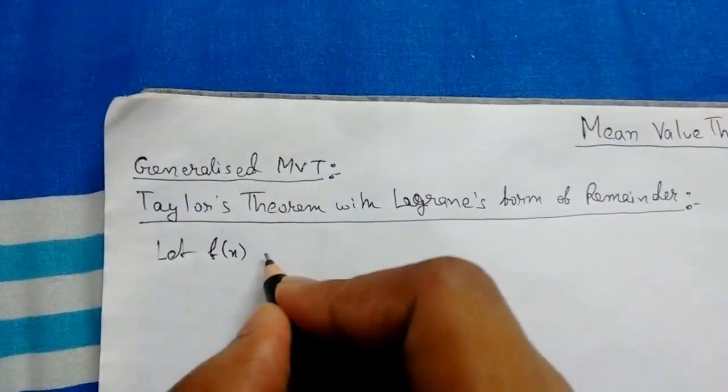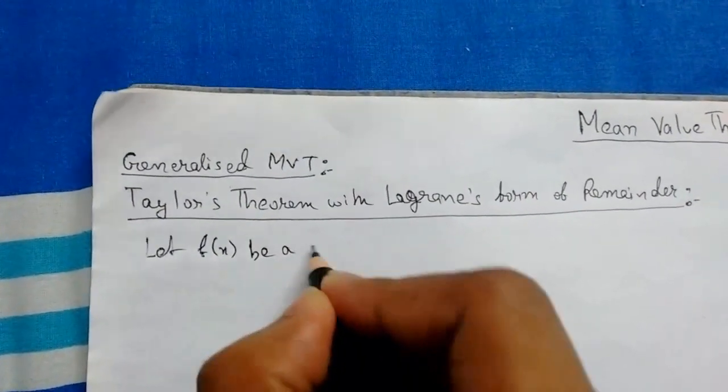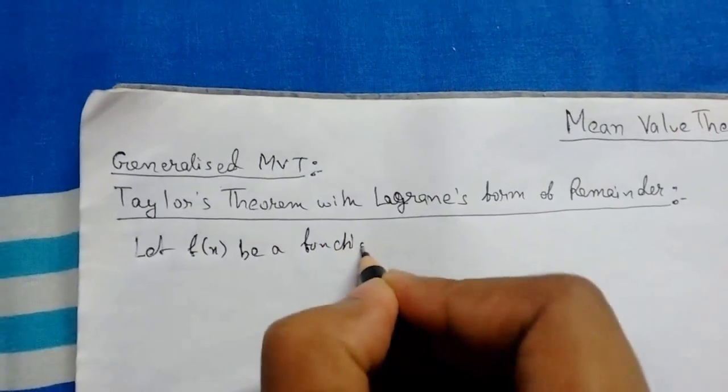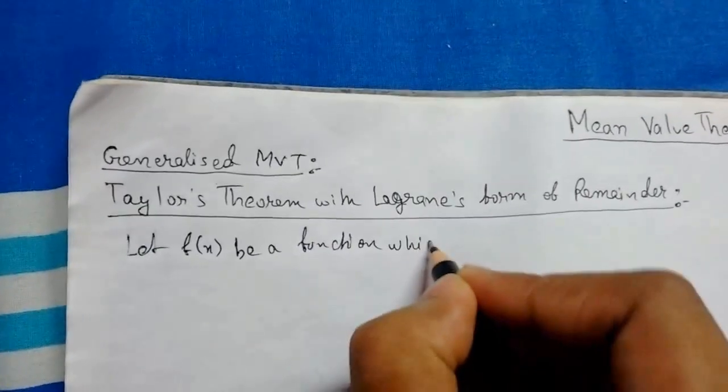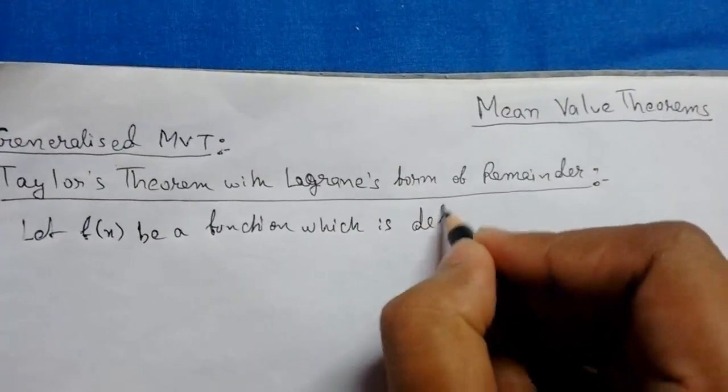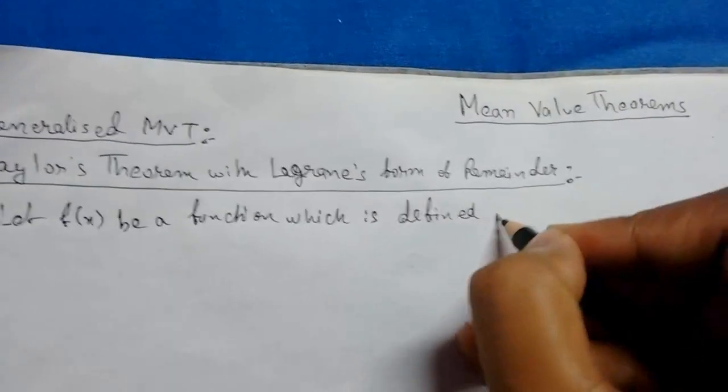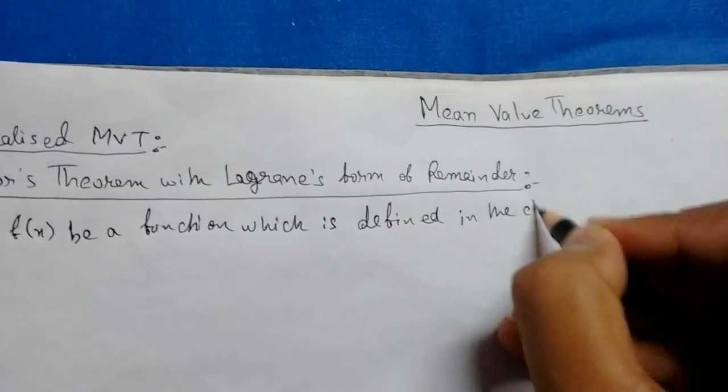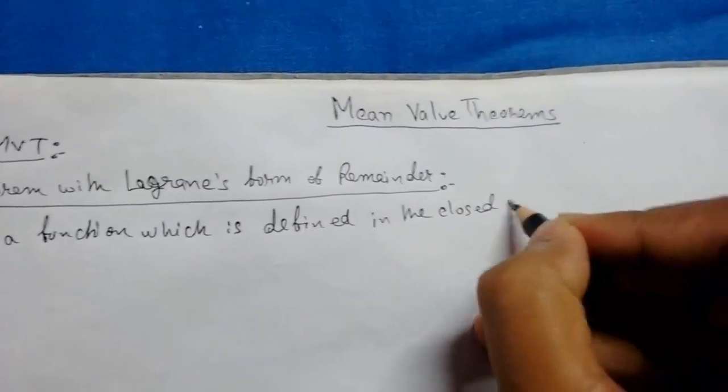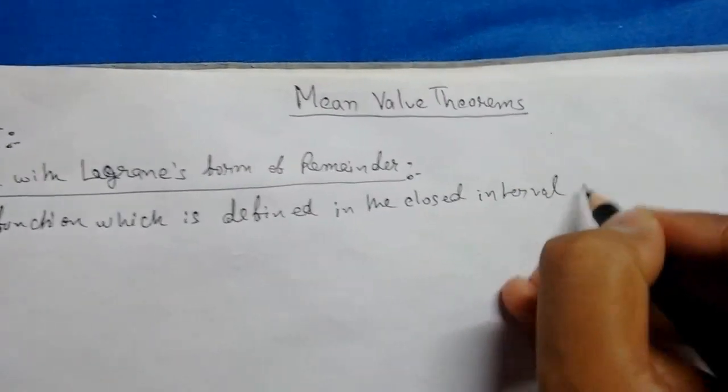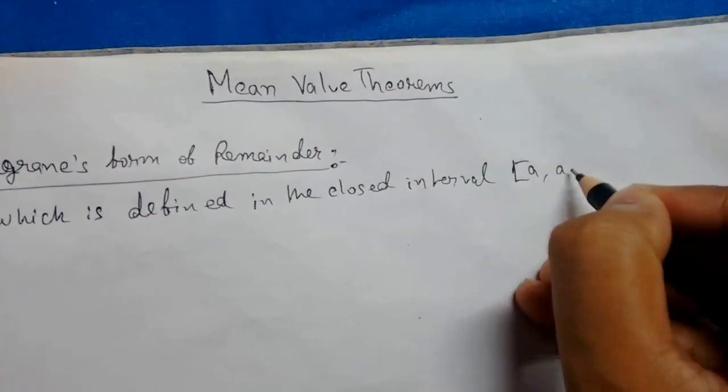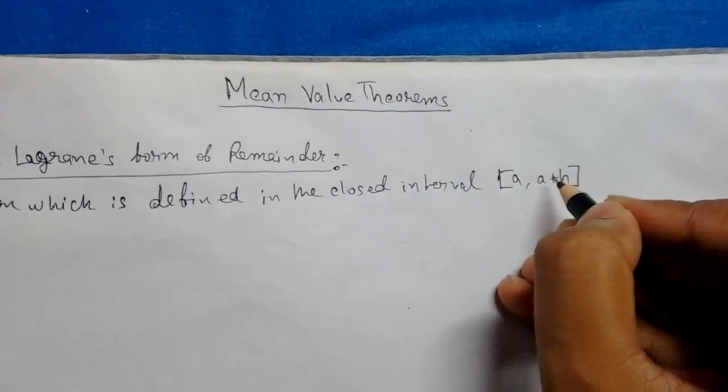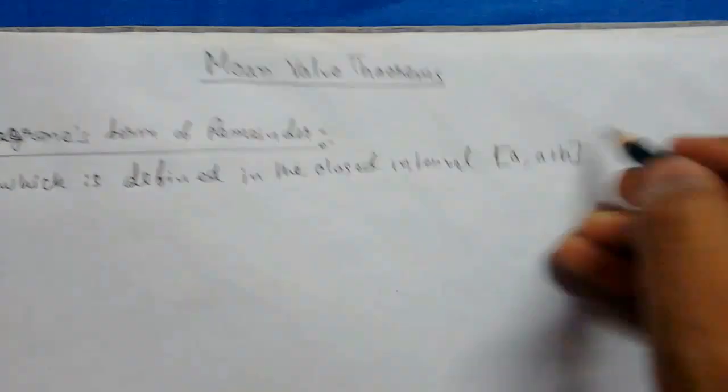...which is defined in the closed interval [a, a+h]. Now here we have replaced b with a plus h, where h is a very small value such that...